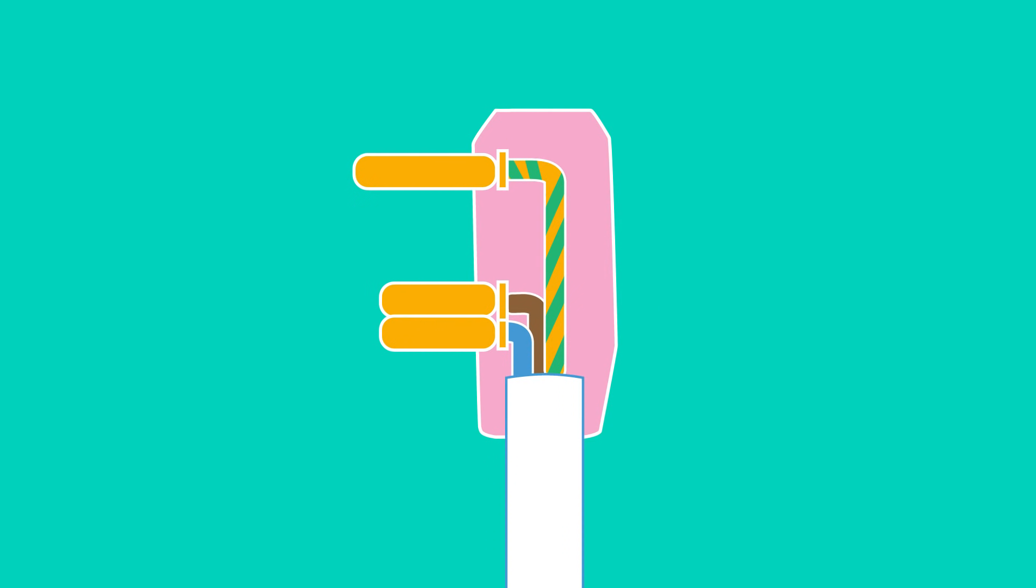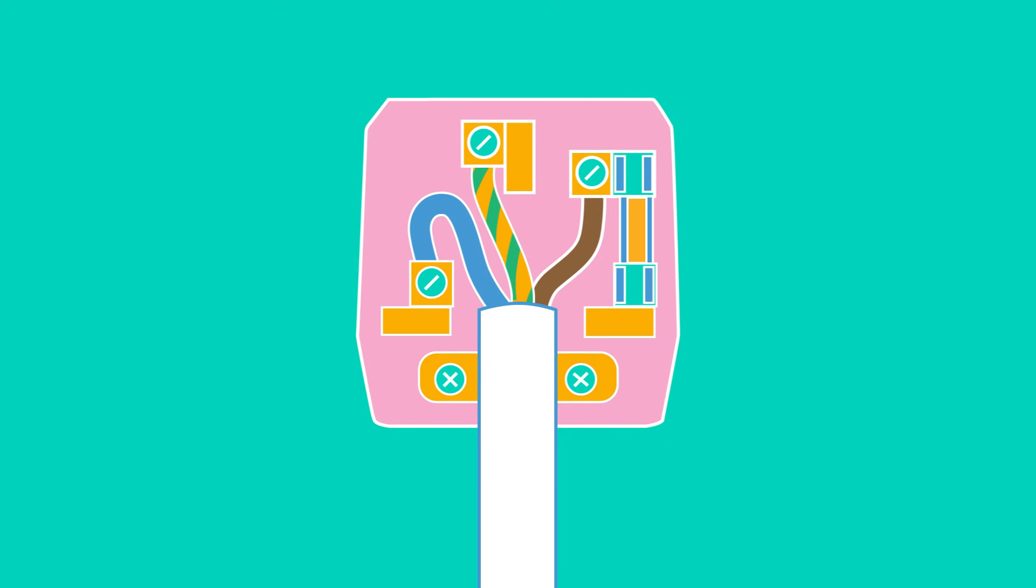Each of the pins in the plug is connected to a different type of wire. We're going to look at a three pin plug with three wires, but two pins are pretty much the same. If we look inside a plug, we can see the different wires.